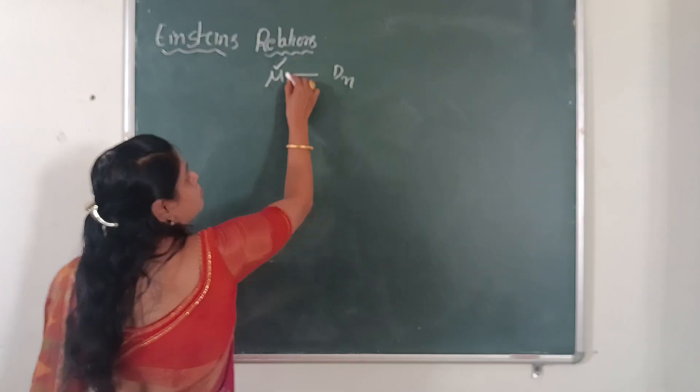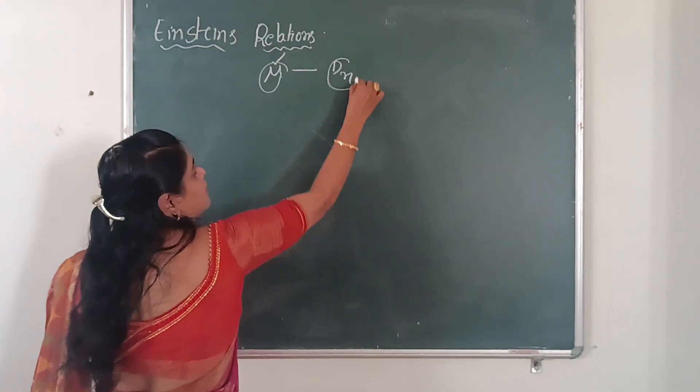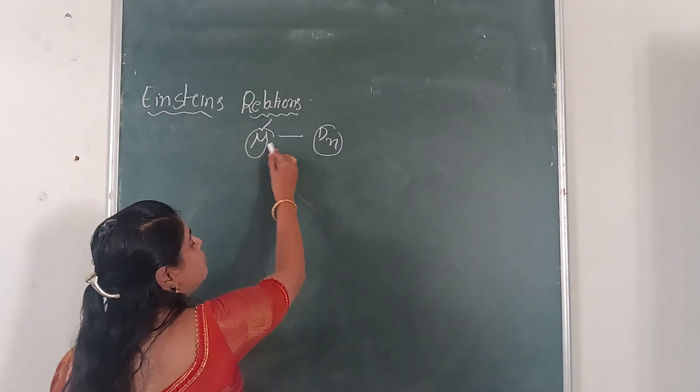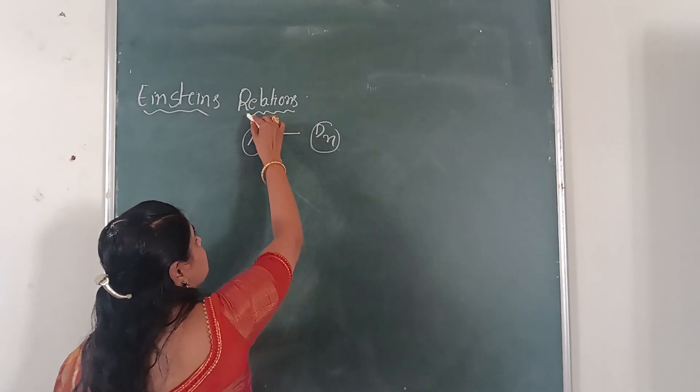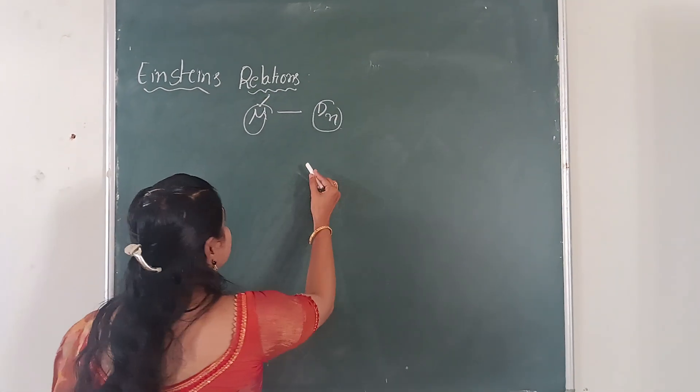The relation between mobility mu and diffusion coefficient of electrons is known as Einstein's relations.